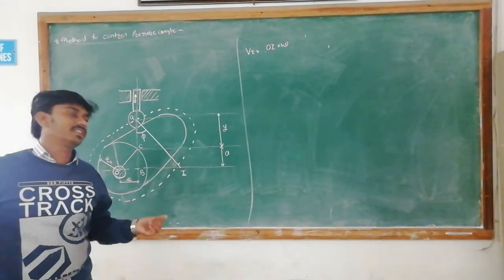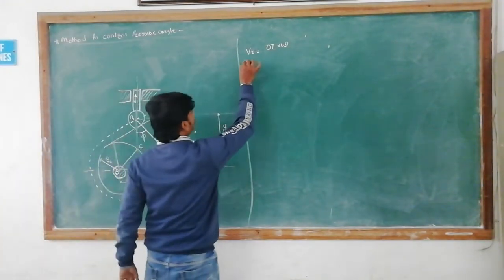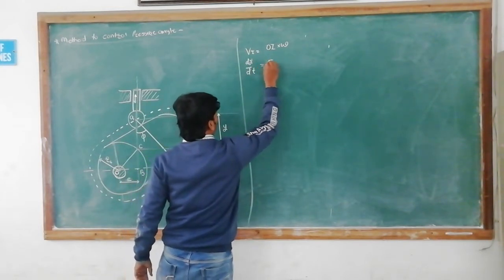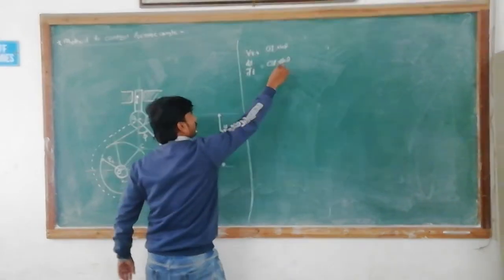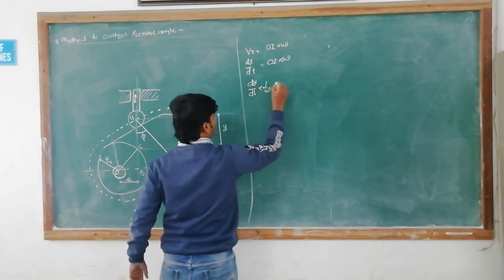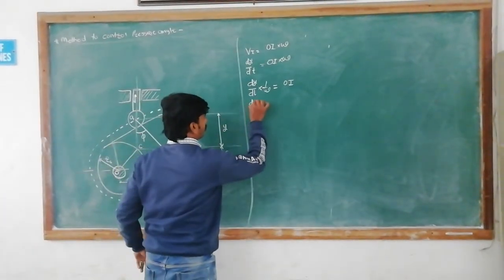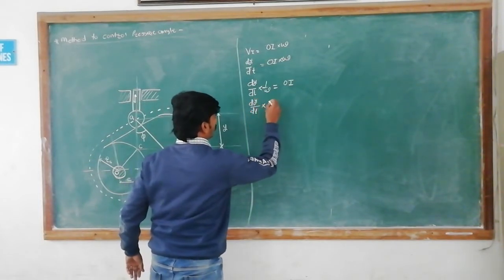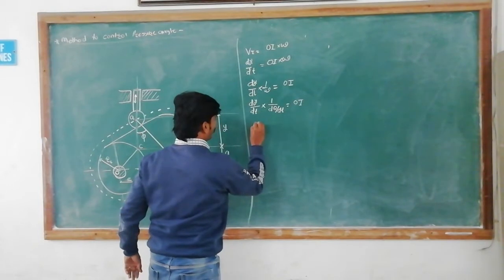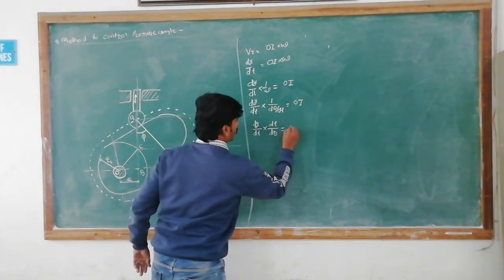As per the instantaneous velocity center concept, this instantaneous velocity is equal to OI·ω. And since velocity is equal to dy/dt, we have dy/dt = OI·ω. Transferring ω, this becomes dy/dt · (1/ω) = OI. Since ω = dθ/dt, therefore dy/dθ = OI.